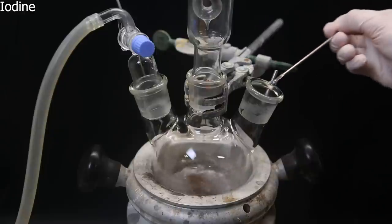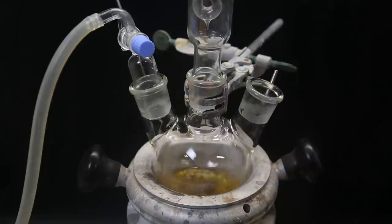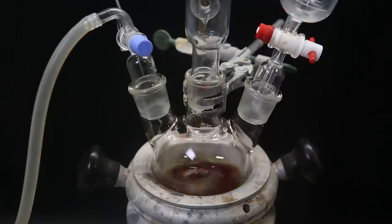Now I add some small pieces of iodine, which will remove the magnesium oxide coating and expose fresh magnesium. The mixture turns a dark orange, and I then attach a dropping funnel.